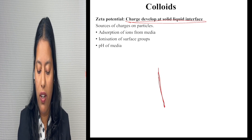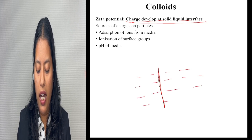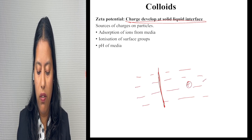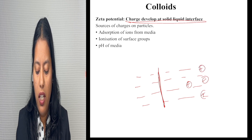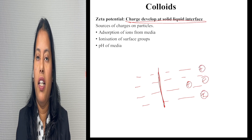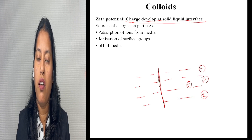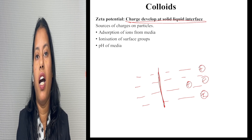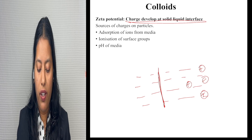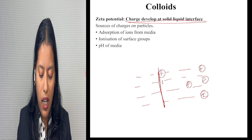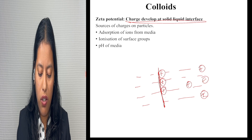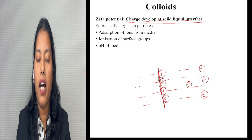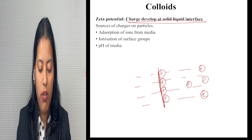Positive and negative charges — these ions are getting attracted toward the surface. They are getting adsorbed onto the surface and they are imparting charges to the surface. So they are getting adsorbed at the interface of the surface and they are imparting charges.